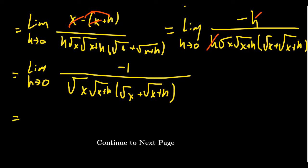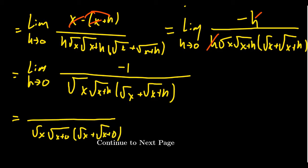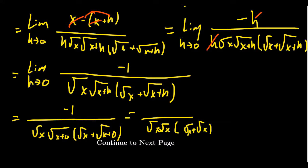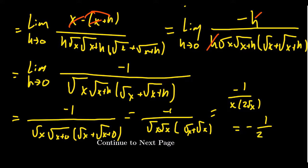Substituting h equals 0, we get negative 1 over the square root of x times the square root of x plus 0, times the square root of x plus the square root of x plus 0. Getting rid of the zeros, that's the square root of x times the square root of x — which equals x — times the square root of x plus the square root of x, which is 2 times the square root of x. So we end up with negative 1 over 2x times the square root of x.